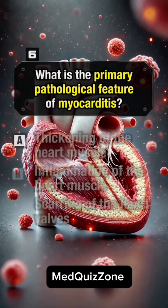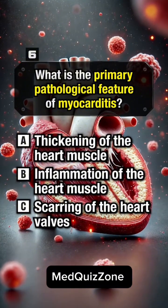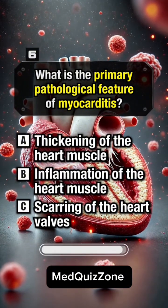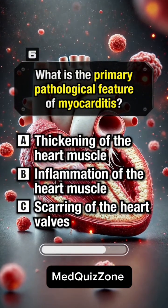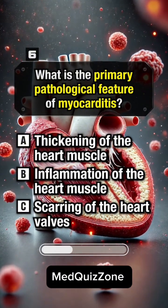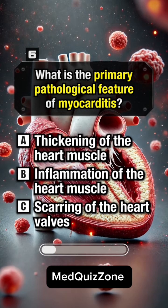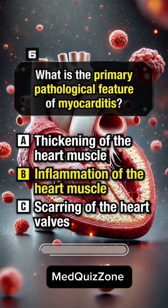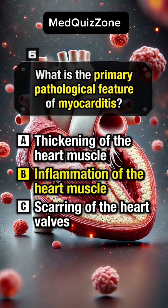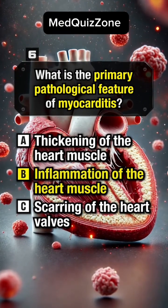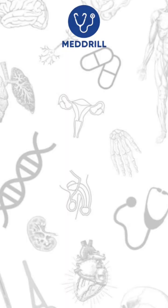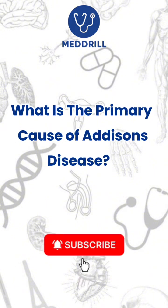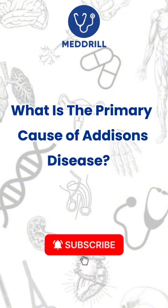What is the primary pathological feature of myocarditis? Answer B: Inflammation of the heart muscle.